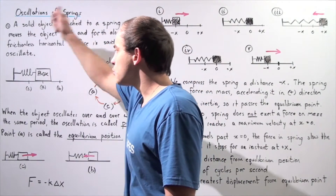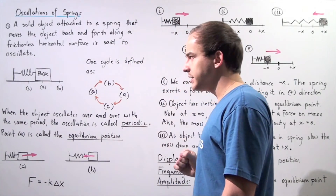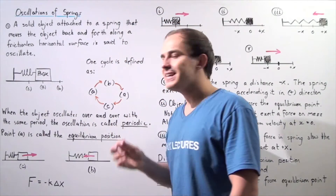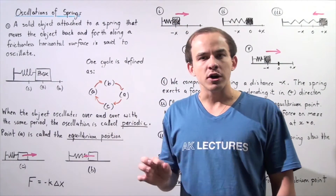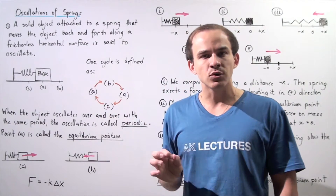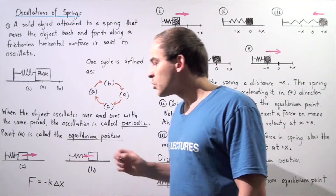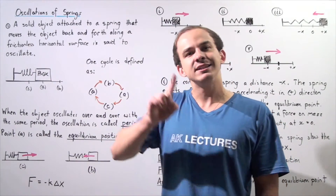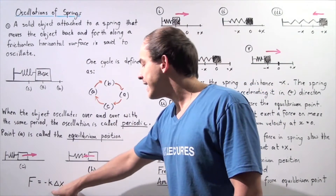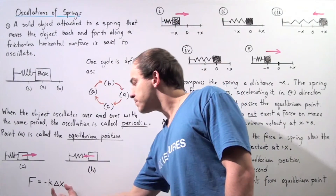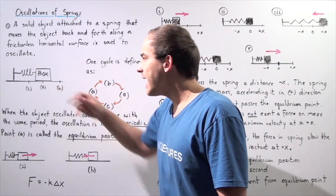We have a box with some mass attached to a coil spring which is attached to a wall. Let's suppose we choose our equilibrium point to be point A. An equilibrium point is essentially a point at which the force created by the spring acting on the object is zero. So our displacement at point A is zero. Looking at Hooke's law, the force equals negative K times displacement, and since displacement at A is zero, the force acting on our object at point A must be zero.